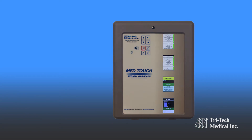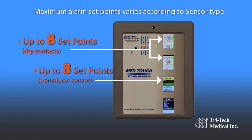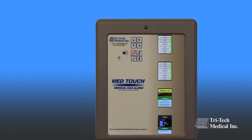Each dry contact module has up to eight alarm set points. Each transducer module also has up to eight alarm set points, and each 4 to 20 milliamp module has two set points.